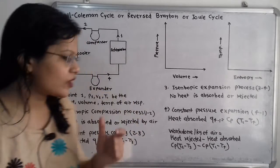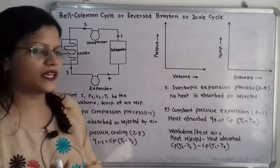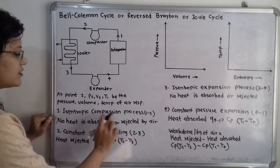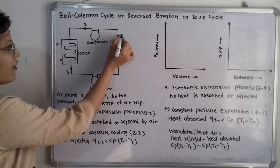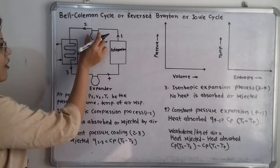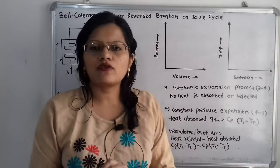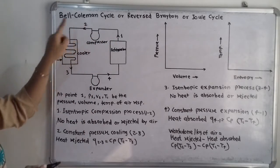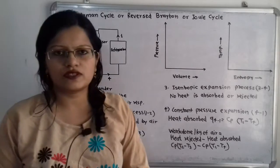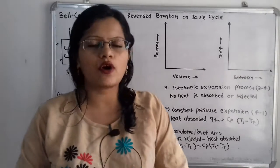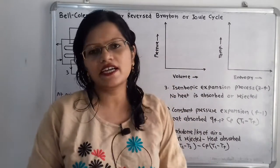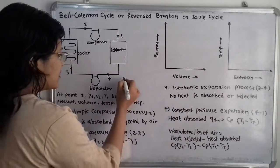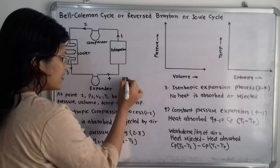The first process is isentropic compression, taking place in the compressor. This is process 1 to 2: before the compressor is point 1, and after compression — the air coming out of the compressor — is point 2. In this compression process, pressure is getting increased.